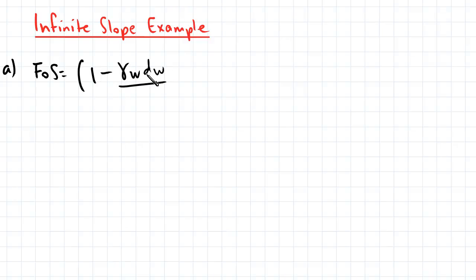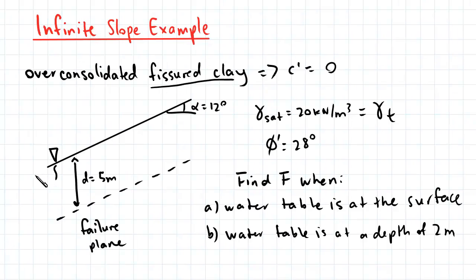So: 1 minus gamma w d w divided by gamma t d, multiplied by tan phi dash divided by tan alpha. Now because the water table is at the surface, so this here is D w.